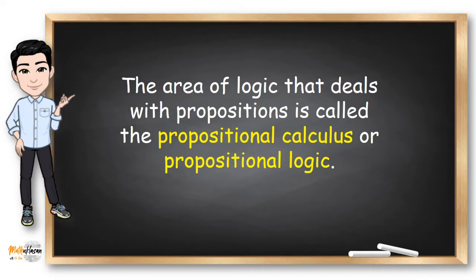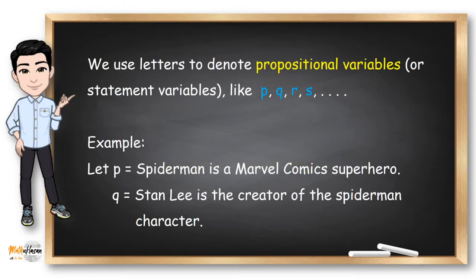The area of logic that deals with propositions is called the propositional calculus or propositional logic. We use letters to denote propositional variables like P, Q, R, S, and so on. But other books use capital letters to denote propositional variables. So I guess it depends upon what you are used to, right? But in our logic video series, I will often use small letters.